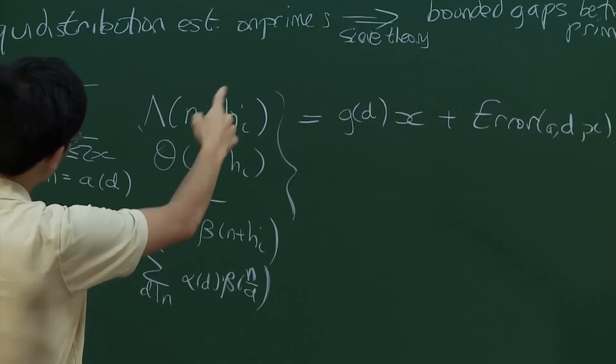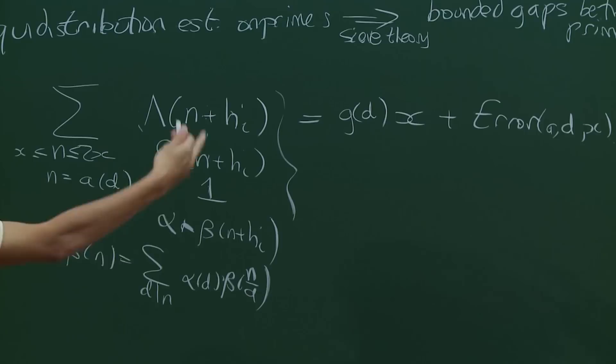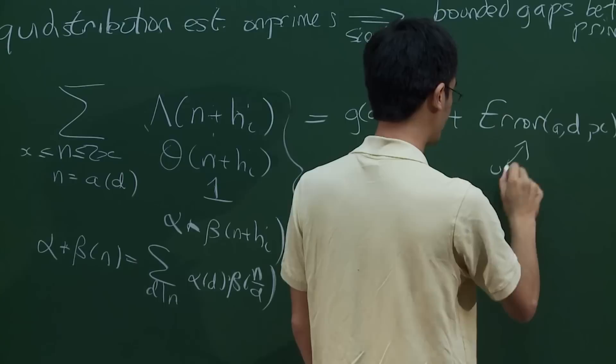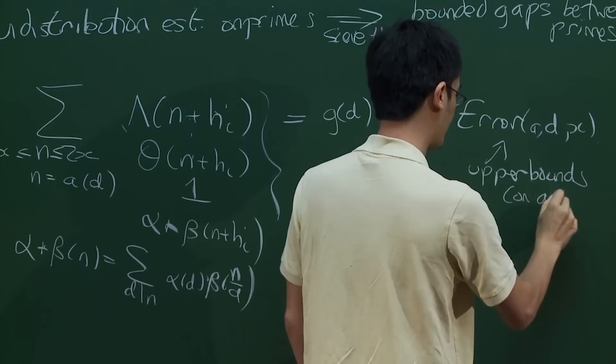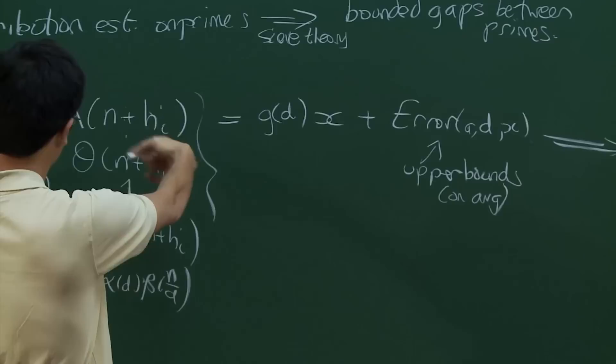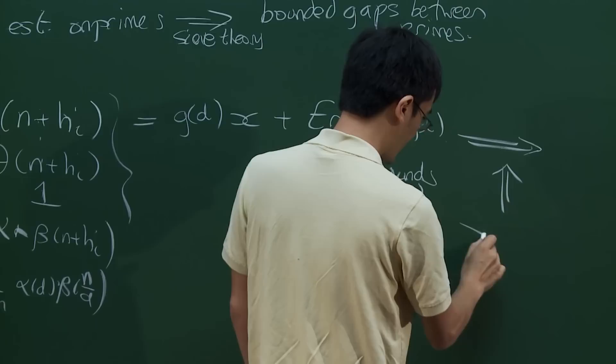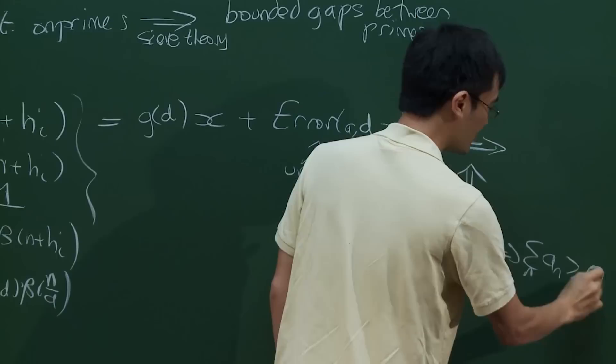You sum these functions in some arithmetic progression in some range, say between x and 2x. For all these expressions, there is expected to be a main term, something like x times some function, typically just of the modulus, plus an error term depending on a and d. By an equidistribution estimate on these functions, what we mean is we have some bound on this error term, maybe on average.